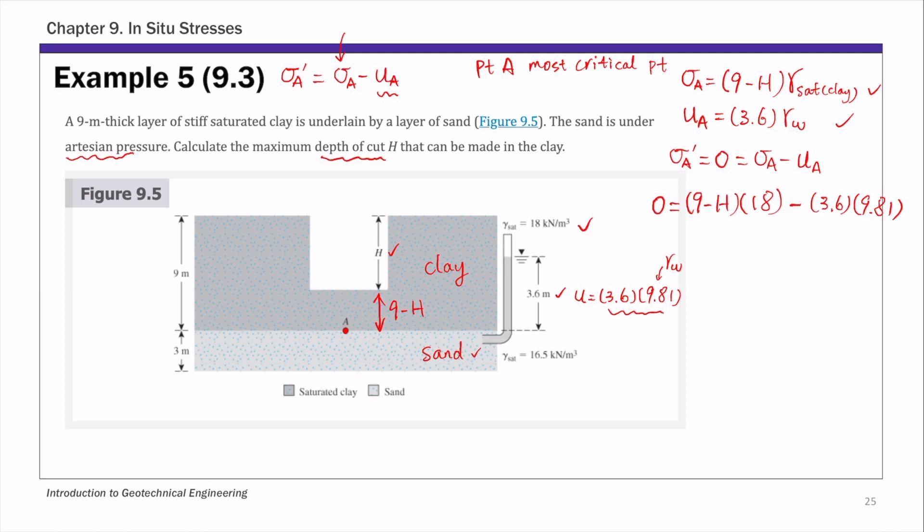So at limit state, sigma A prime equals zero, as I mentioned. You can solve for H. And H in this case is 7.04 meter.